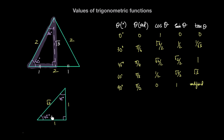Similarly, we can use the 45-45-90 triangle, where the two perpendicular sides are each 1 unit. The hypotenuse is root of 1² plus 1², which is root 2. The sine of 45 is the opposite over the hypotenuse, and cosine of 45 is the adjacent over the hypotenuse — both giving 1 over root 2, or equivalently root 2 over 2. And tan of 45 degrees, or pi over 4 radians, is opposite over adjacent, so 1 over 1, which is just 1. We can use these two triangles to recall cosine, sine, and tan for 30°, 45°, and 60° — or pi over 6, pi over 4, and pi over 3 radians.